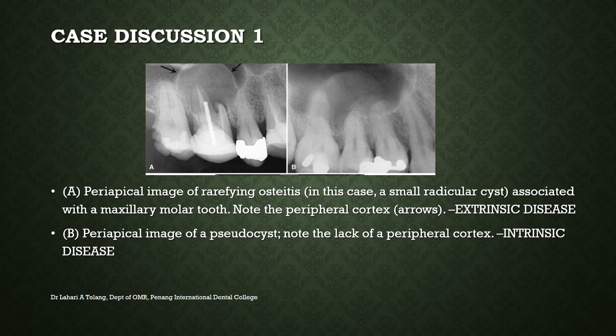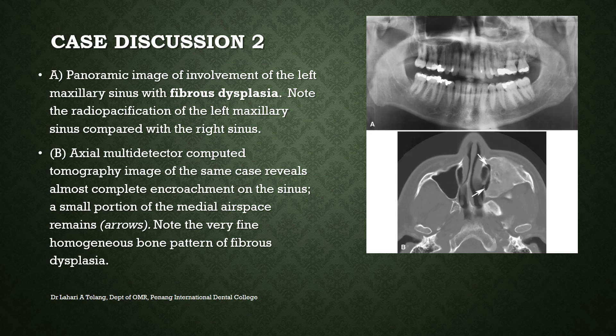This is a case of extrinsic involvement of the maxillary sinus by fibrous dysplasia. Image A shows the left maxillary sinus with a mixed radio-opacity and radiolucency, while the right sinus appears reasonably well-defined. The axial multi-detector CT images show almost complete encroachment of the sinus on one side, with only a small portion of the medial space remaining. The radio-opacification is homogeneous and consistent with the pattern of fibrous dysplasia.